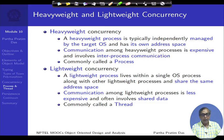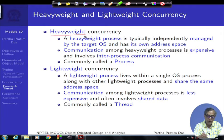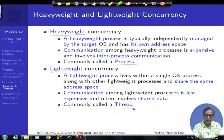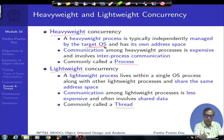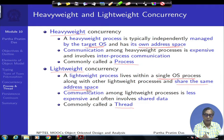Coming to the technical terms, concurrency basically relates to processes in our computing system. We talk about two kinds: heavy-weight concurrency, commonly called a process, and light-weight concurrency, commonly called a thread. A heavy-weight process is an entity the OS deals with and provides its own address space. In contrast, a light-weight concurrency or thread happens within a single OS process, sharing the address space of that process rather than getting a separate one.